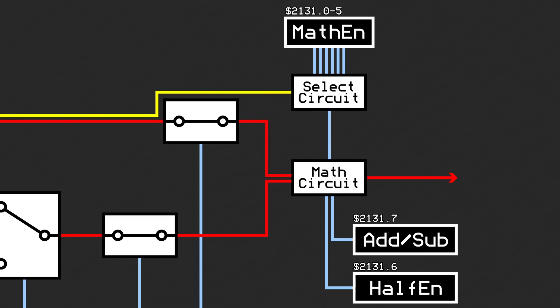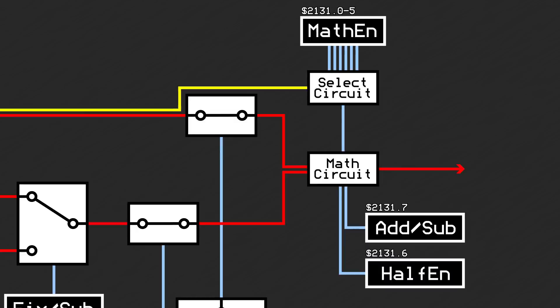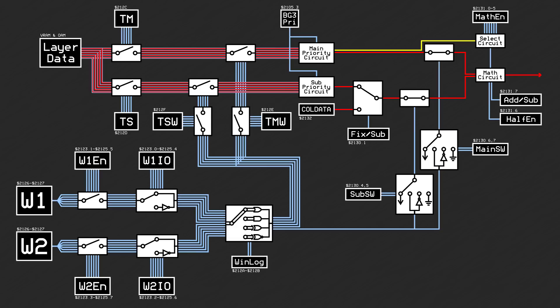Cutting in half turns out to be the average when adding. If the result is greater than 31, it maxes out at 31, and if it's negative, it is just set to 0. Additionally, if one of the screen's data is transparent, the other screen is put through without doing any math. If both screens' data are transparent, then the resulting color will be black.